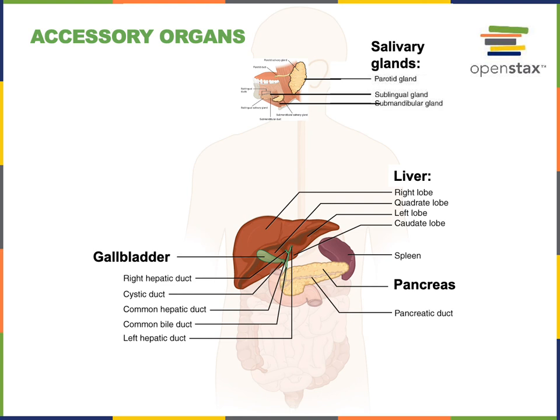The function of the gallbladder is to store and concentrate bile. When the liver secretes bile into bile ducts, those bile ducts carry the bile into the gallbladder, and the gallbladder stores the bile until it needs to be released. When there is a large amount of food entering into the duodenum, the liver and gallbladder will secrete bile into the duodenum, where it enables the emulsification of lipid-soluble nutrients, facilitating their digestion and absorption.